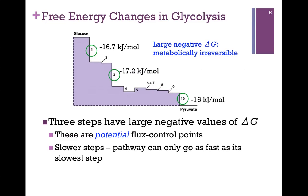Here we have an illustration of the ten steps of glycolysis and their relative energy differences. At the top we have glucose, and we're going to split that into two molecules of pyruvate at the end. Here are the ten steps in between, and the height of each step is meant to represent the energy difference. You can see some of these are very small steps and some are larger steps.